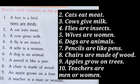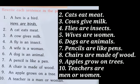'A fly is an insect' transforms into 'Flies are insects', as the plural form of fly is flies and insect becomes insects. Since we have plurals, 'is' changes to 'are'. Likewise, 'A dog is an animal' changes to 'Dogs are animals', and 'A pencil is like a pen' transforms into 'Pencils are like pens'.